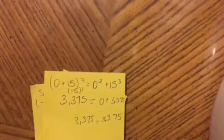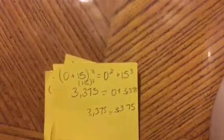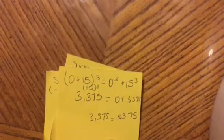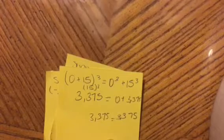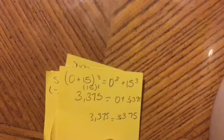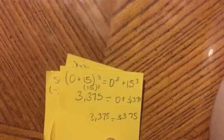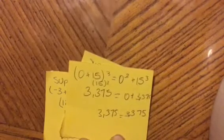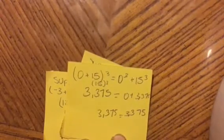This is a made-up example. I use z plus 15 cubed equals z cubed plus 15 cubed. Plugging in zeros, I got the equivalent numbers. 3,375 is equal to 3,375 because 0 plus 15 is 15 cubed is 3,375. And 0 squared plus 15 cubed is 0 plus 3,375, which is equivalent to 3,375.